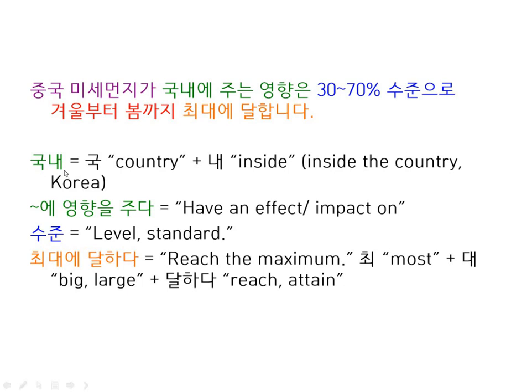If you've studied Chinese or Japanese before, you'll have seen this exact same word, 국내, using the same Chinese characters in those languages as well. Obviously, whichever country you're talking about depends on the language being used. So because this is a Korean text, 국내 — the 국 — is going to be referring to Korea. In this sentence, 중국 미세먼지가 국내에 주는 영향은, it could be a bit confusing since you could read it as the impact within China, but we know from context that they're talking about the Korean 국내.